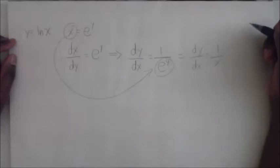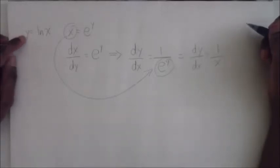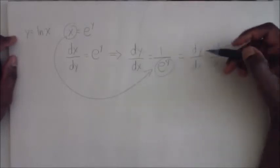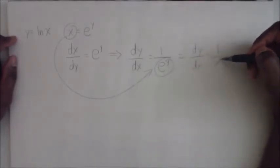And so that would prove that if y is the natural logarithm of x, then the derivative of y with respect to x is one over x. Anyway, I hope you find this informative and I'd like to thank you very much for watching.